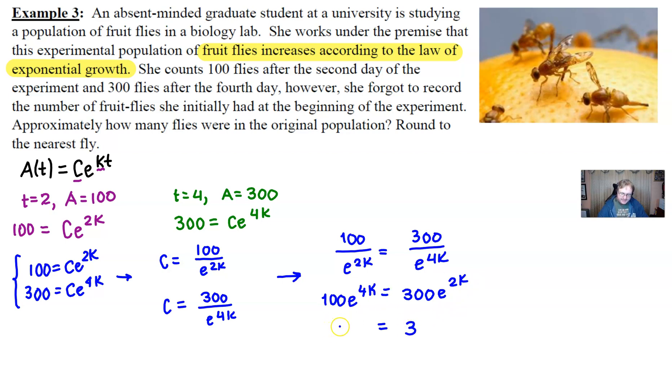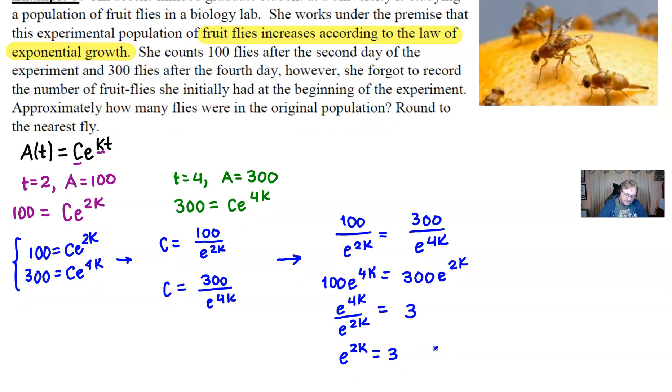and divide both sides by e^(2k). I want to set that up over here on the left side, if you don't mind. Because the 4k and the 2k will subtract from each other, we would get e^(2k) equaling 3, at which point I'm going to use the space up here. We're going to take the natural log of both sides of that equation. And sure enough, the 2k comes out in front, the ln of e disappears becomes 1.